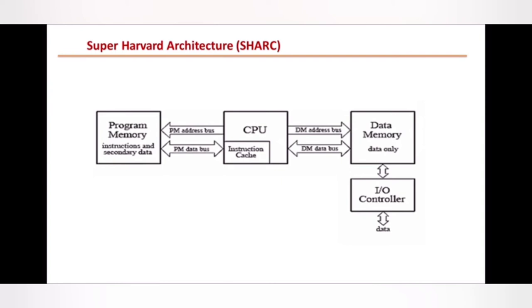In the next instruction cycle, when you want to execute them again, the CPU won't go into the deep analysis of the program memory and data memory. It will just fetch the instruction stored in the cache memory and reflect it back, making execution much faster.